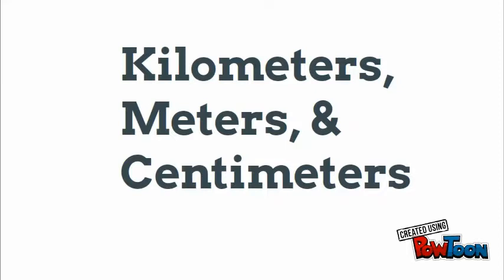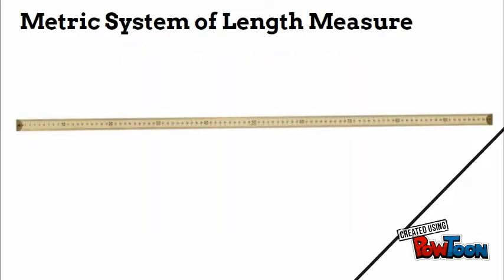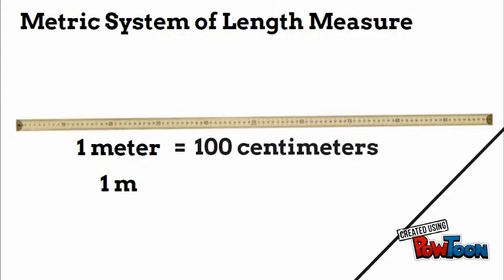So fourth graders, this lesson is on kilometers, meters, and centimeters. These units of measurement are part of what we call the metric system. One meter, which will be seen as 1m sometimes, is equal to 100 centimeters. Centimeters will be written with the little cm sometimes when you see it.